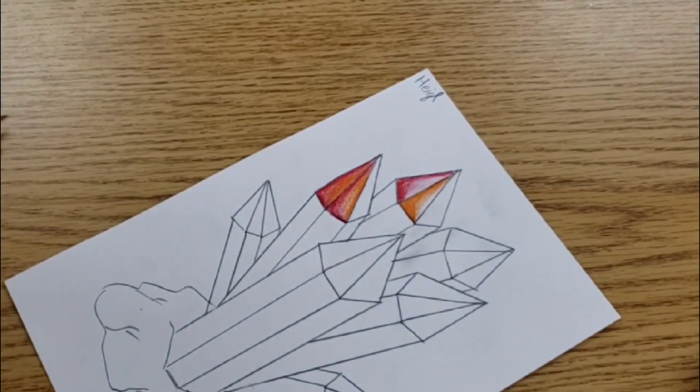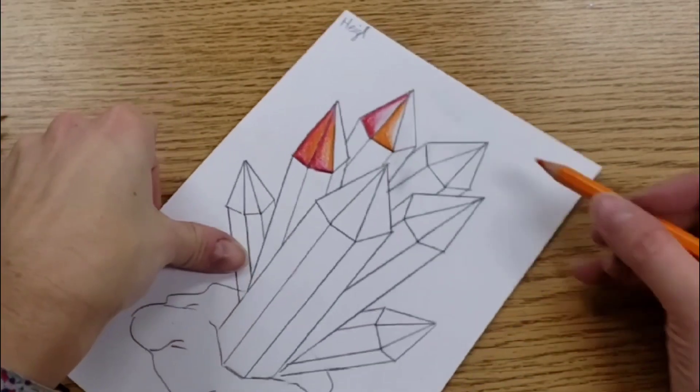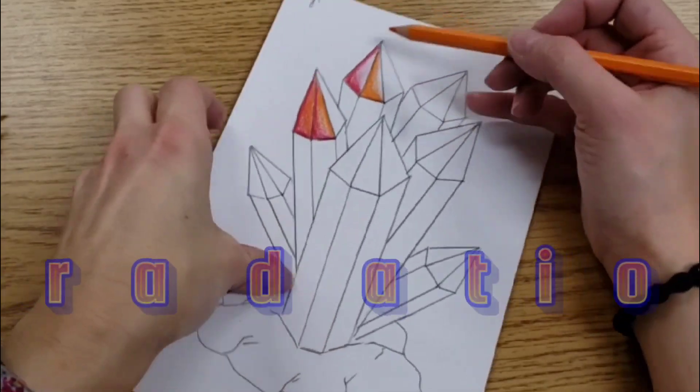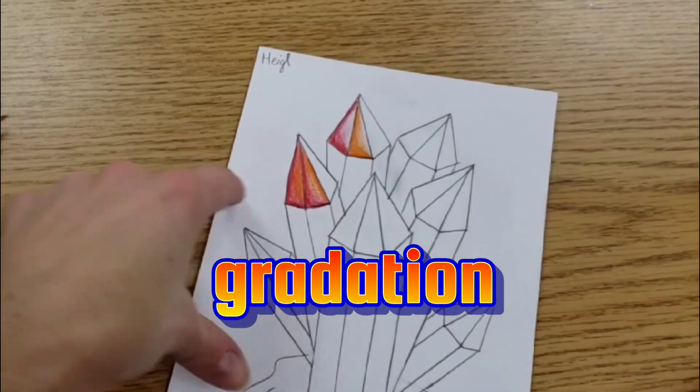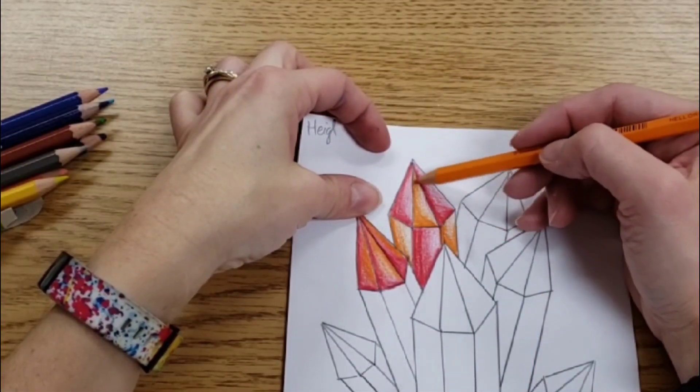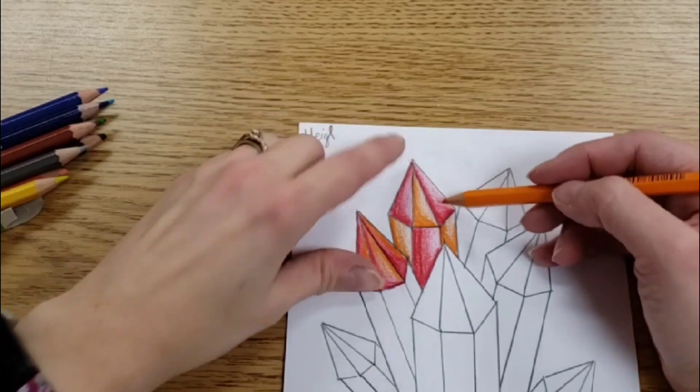We're not trying to make it look like stripes on a sweater. We want there to be something called gradation. It's going to go from dark to light inside each little section that you have. And I'm going dark to light, dark to light, inside each section.